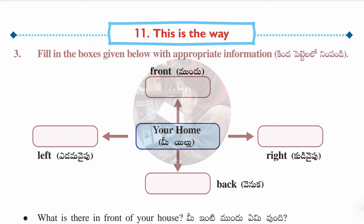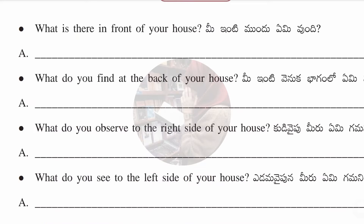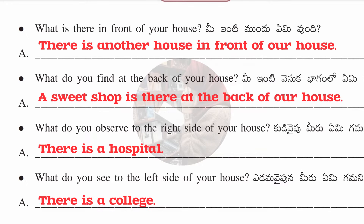The third section has blank boxes to fill with information about what surrounds your home. Imagine your home is in the middle — write what is in front, behind, to the right, and to the left. What is in front? There is another house. What is at the back? A sweet shop. What is to the right? A hospital.